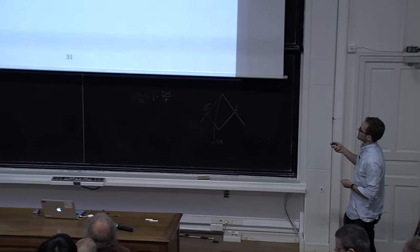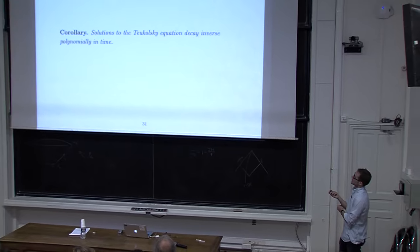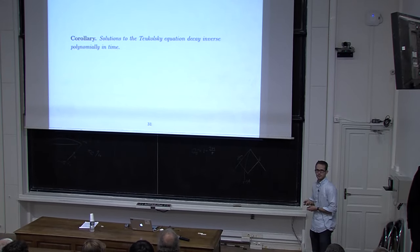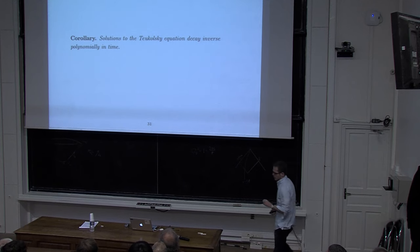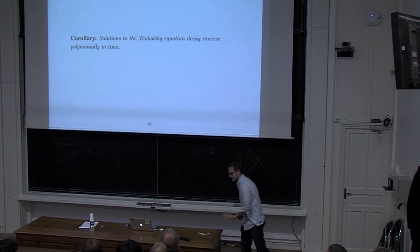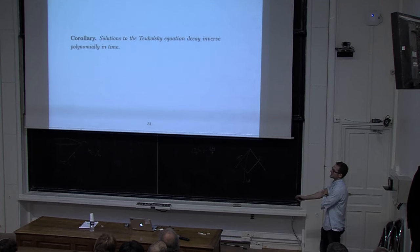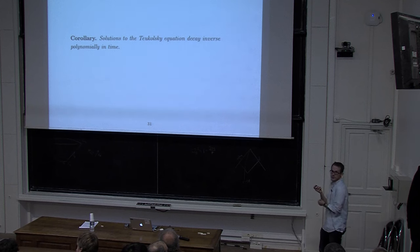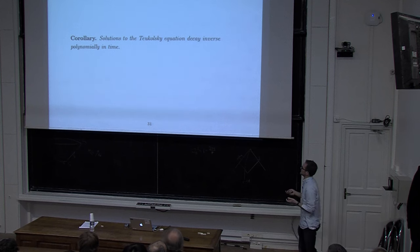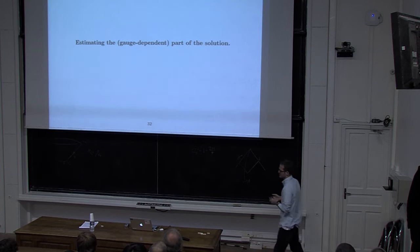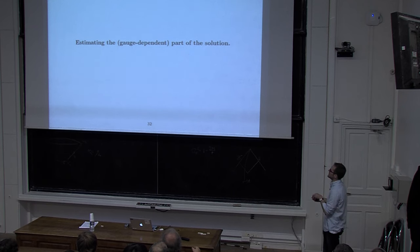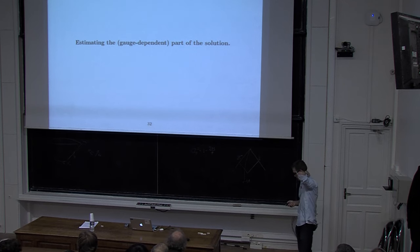You have boundedness for all geometric quantities, but not decay. Why? This is related to the pure gauge solutions. Let me explain. We write S for all geometric quantities in the initial data gauge. By initial data gauge I mean: you start with initial data for the system, you still have the freedom to add pure gauge solutions, and you use that freedom to set certain quantities to be zero on the horizon — that puts the solution in the initial data gauge.